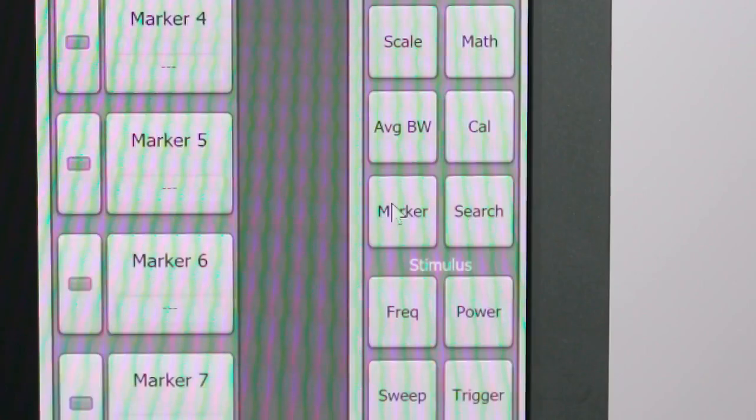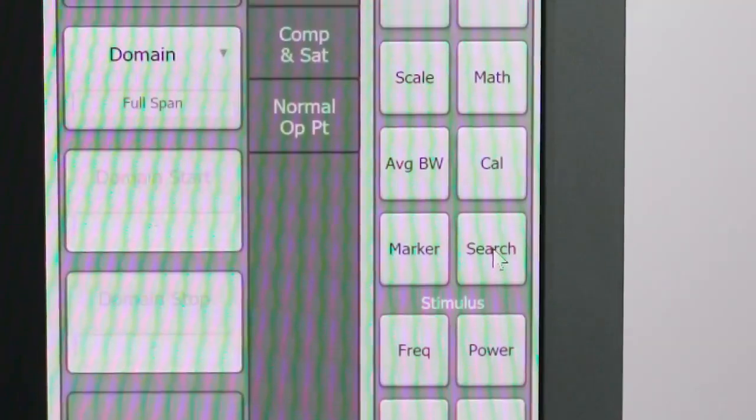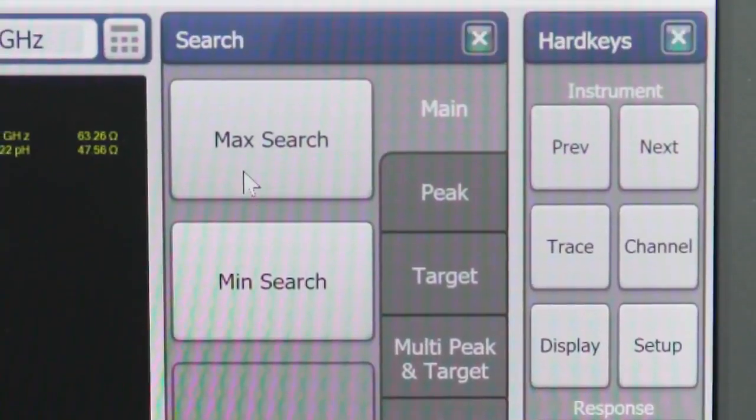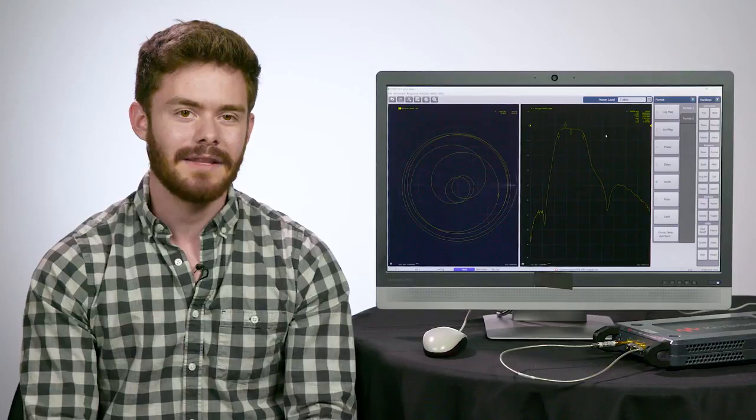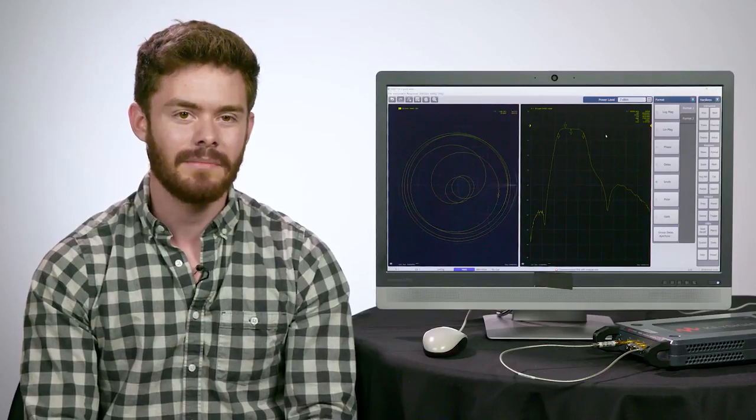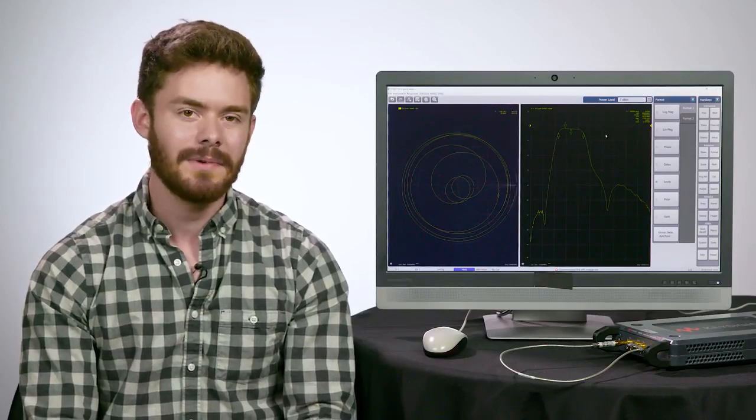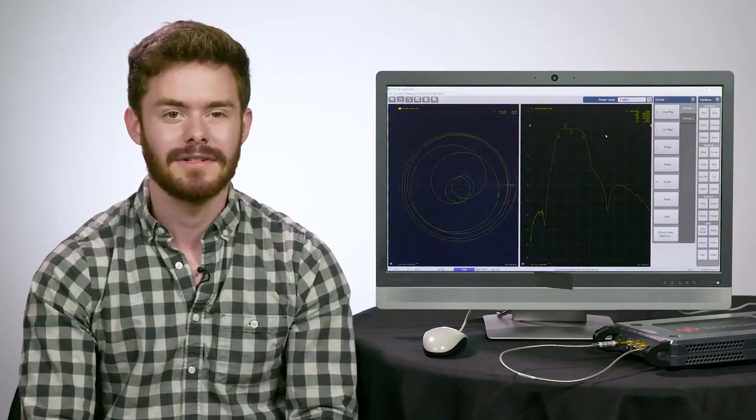Using a marker on this trace, I can measure the maximum power of the trace. Using the marker and max search functions, I find the max value is about minus 1.6 dB, which means we have about minus 1.6 dB insertion loss.